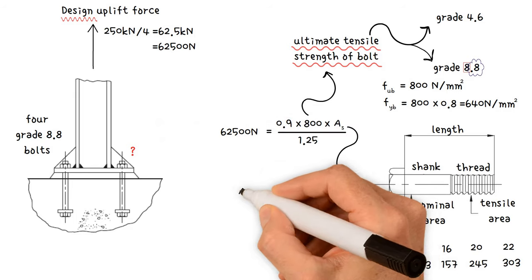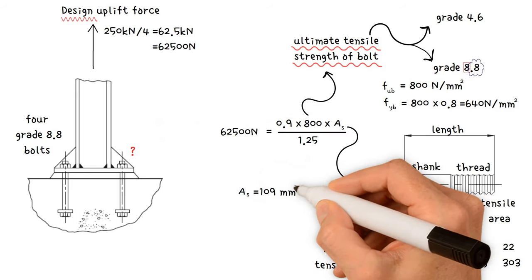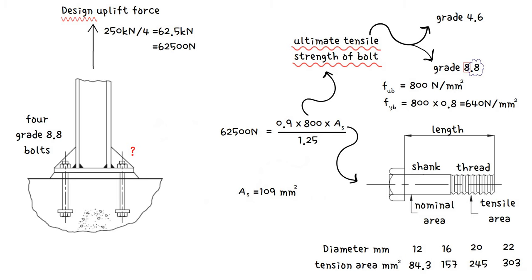Therefore, the bolt tension area equals 109 millimeters squared. As a result, we should use 16 diameter bolts, tension area 157 millimeters squared.